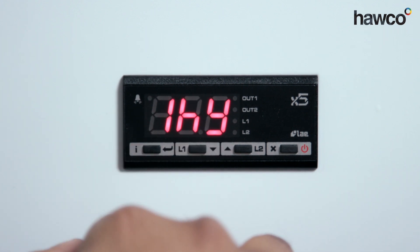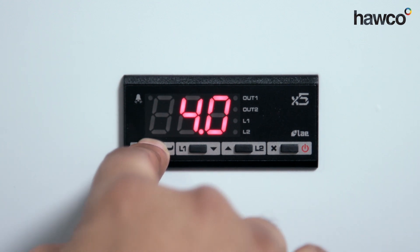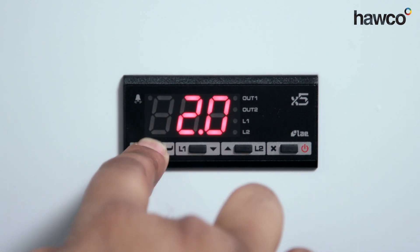The next one we're going to come across is 1HY. This is our differential. So by setting it at four degrees, when we get to four degrees above set point, the refrigerator will turn on. So I'm going to reduce this down to two. There's a differential of two degrees for the refrigerator.